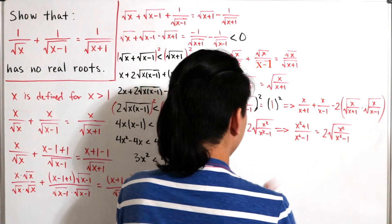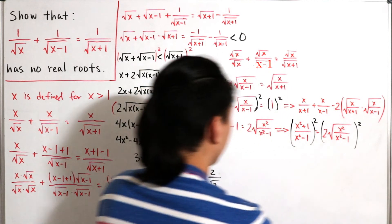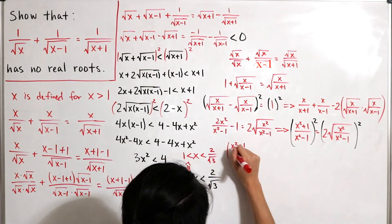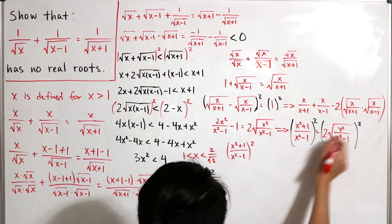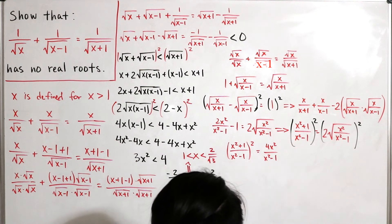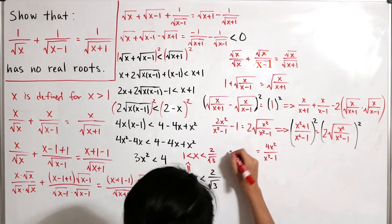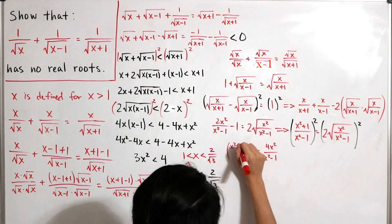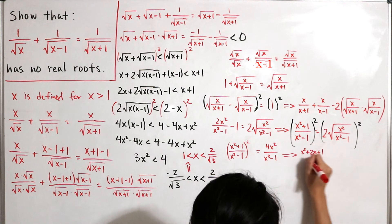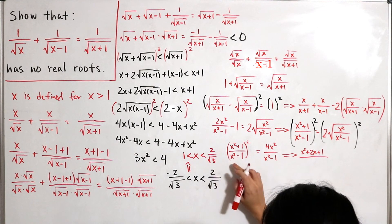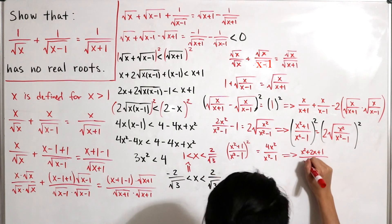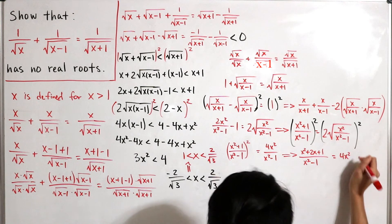We square both sides once more. The left side gives (x squared plus 1) squared divided by (x squared minus 1) squared, and the right side is 4x squared divided by (x squared minus 1). Expanding the numerator on the left using FOIL gives x squared plus 2x plus 1. Multiplying both sides by (x squared minus 1), one factor cancels on the left, leaving (x squared plus 2x plus 1) over (x squared minus 1) equals 4x squared.